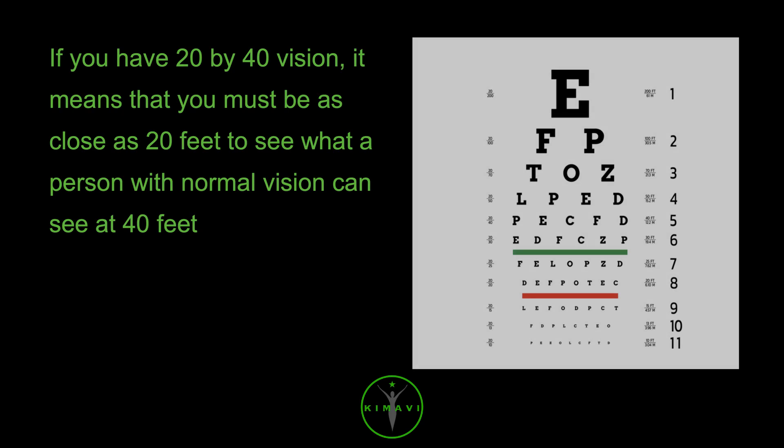If you have 20 by 40 vision, it means that you must be as close as 20 feet to see what a person with normal vision can see at 40 feet.